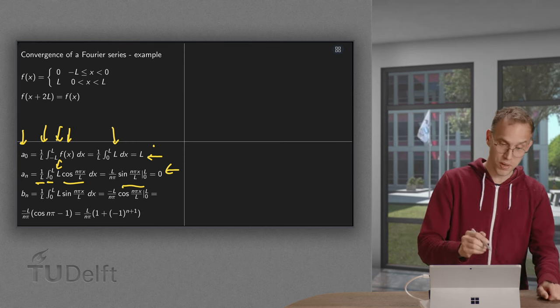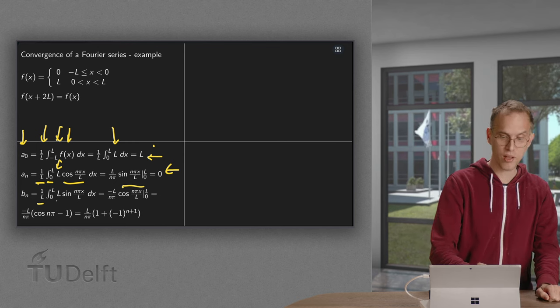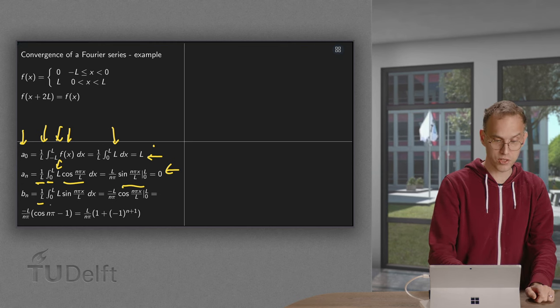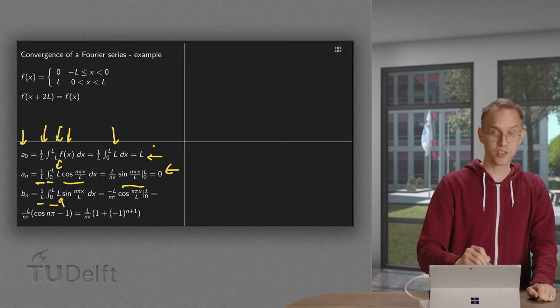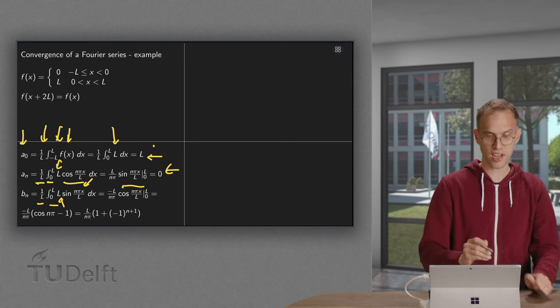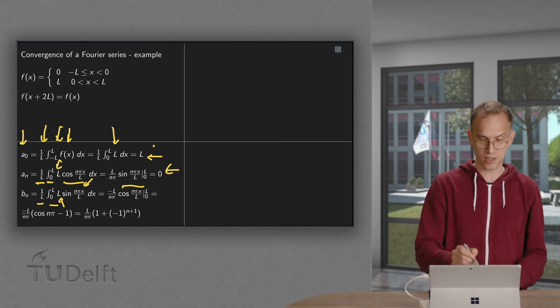Moving on to the bₙs, again, a 1 over l, only have to integrate from 0 to l, because from minus l to 0 we are 0. From 0 to l our function is l, we multiply with the sine, we integrate, we get a cosine.